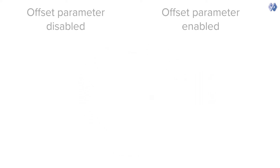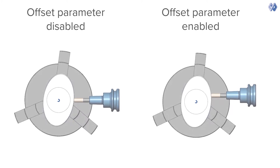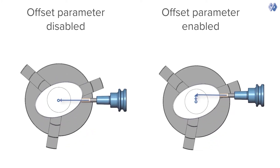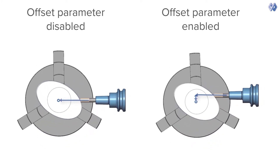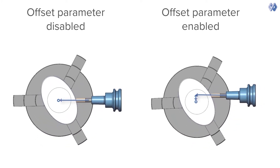A new parameter is now available. The parameter defines the distance between the tool axis and the rotary axis.